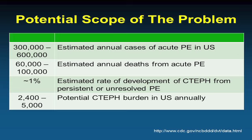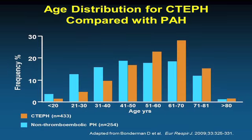What is different about CTEPH compared to non-thromboembolic pulmonary hypertension? Epidemiologically, these patients tend to be older, reflecting the fact that older people get blood clots, though it is being seen in children as well as the elderly.